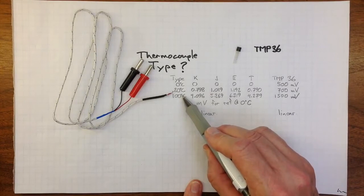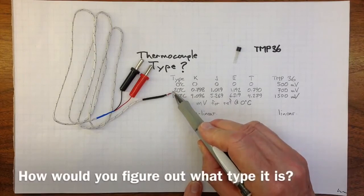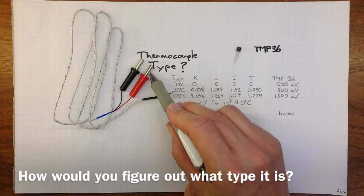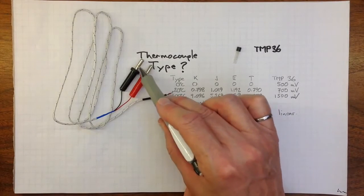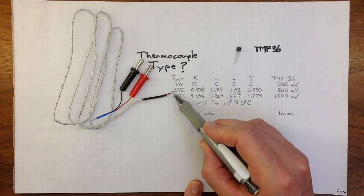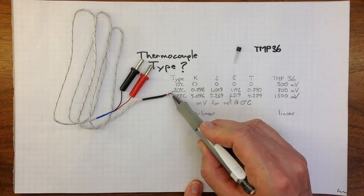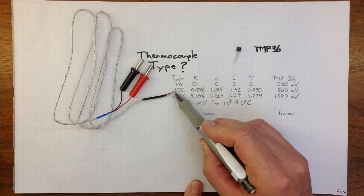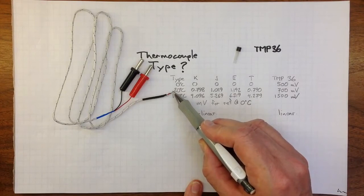The key thing here is it's the temperature of the bead that determines what the voltage is that we'll see on those two wires there. So it's not the temperature of the air around the bead. It's the temperature of the actual junction, the temperature of the actual transducer.